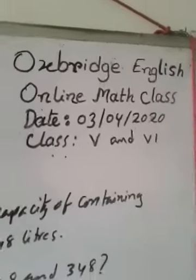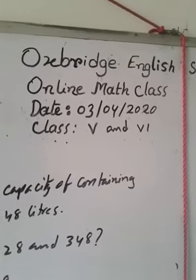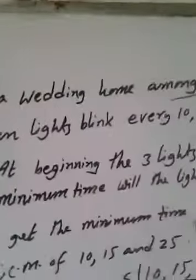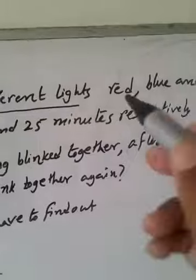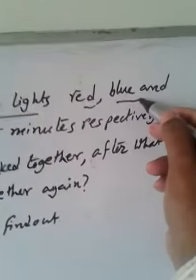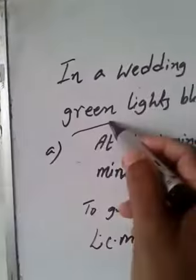Assalamualaikum. This is Math for class 5 and class 6. In a wedding home, among different lights, red, blue and green lights,